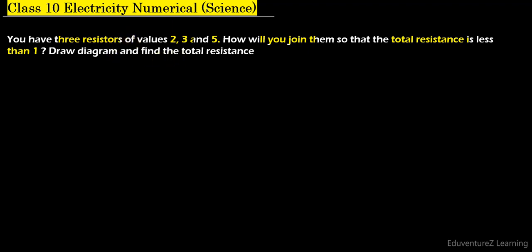So look here, if we connect them in series, then all of them will be added and we will get 10 ohm resistance, which is not less than 1. So the better idea is to connect them in parallel so that we will get a value less than 1.